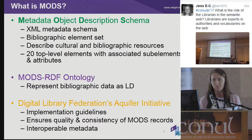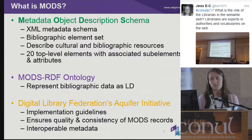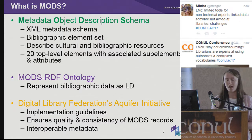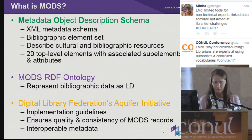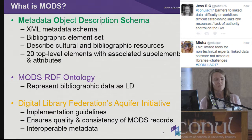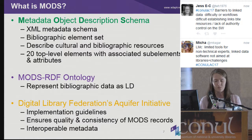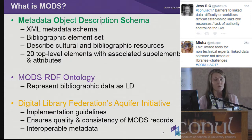We decided the bibliographic records would be generated using MODS — the Metadata Object Description Schema. MODS is an XML-based metadata schema that provides a bibliographic element set that can be used to catalogue library materials. It was developed by the MARC Standards Office at the Library of Congress as a simplified XML version of MARC 21. It's less complex than MARC but a richer alternative to other metadata schemas such as Dublin Core. It allows for the display of hierarchical relationships within and between resources. There is already a MODS RDF ontology available that can be used to represent bibliographic data as linked data.